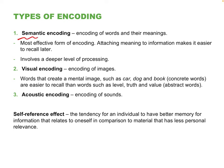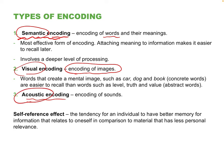The type of information we encode also matters. Some encoding involves language — words, vocabulary, and their meanings — called semantic encoding. For visual learners, we also encode images, which is visual encoding, and we encode sounds, which is acoustic encoding. There are different kinds of encoding depending on the senses we're using. Research also found that information we can personally relate to — the self-reference effect — gives us better recall than less personalized information.